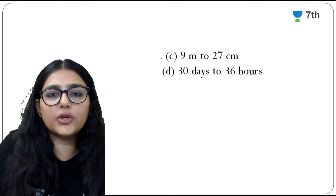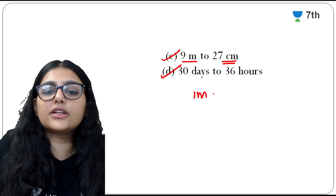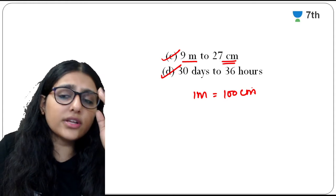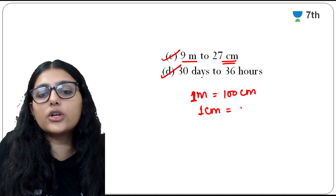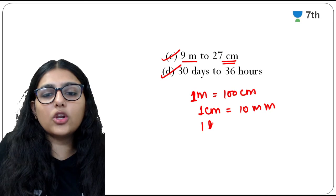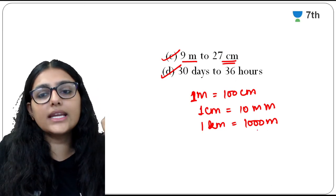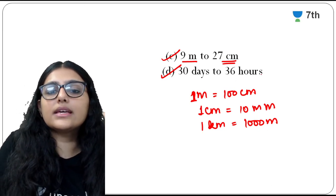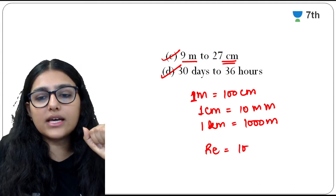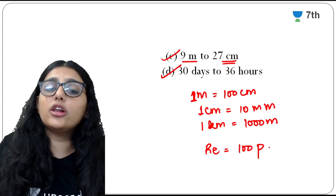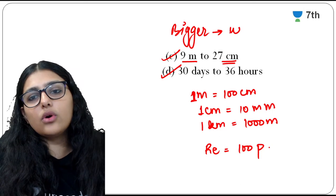These are your practice questions — the remaining conversions are given as homework. Important conversions to remember: 1 m = 100 cm, 1 cm = 10 mm, 1 km = 1000 m; similarly for kg/g, kilolitre/litre; 1 day = 24 hours; 1 rupee = 100 paise. Always try to convert the bigger unit into the smaller unit to avoid decimals.